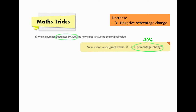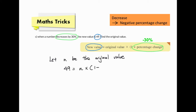The new value is 49 and we have to find the original value. Let n be the original value. Applying the formula, we have 49 equals n times (1 minus 30%), which gives 49 equals n times 0.7. So n equals 49 over 0.7, which means n equals 70. We are finding the original value, not just n, so we should write down: the original value is 70.